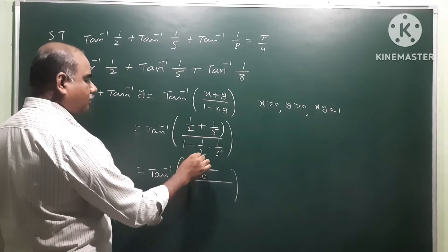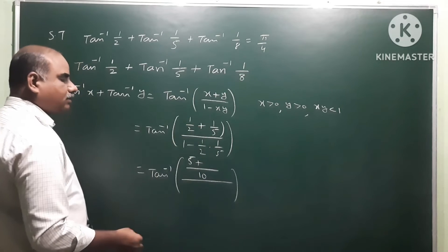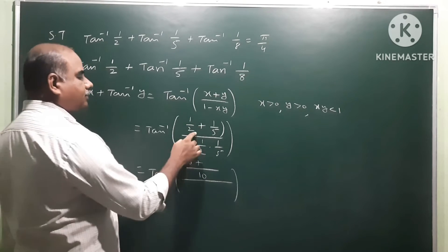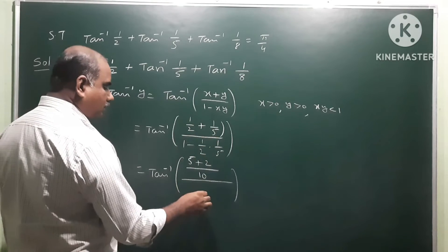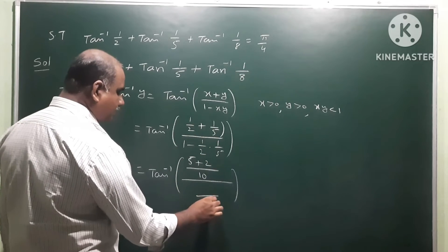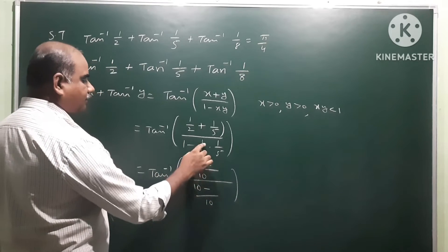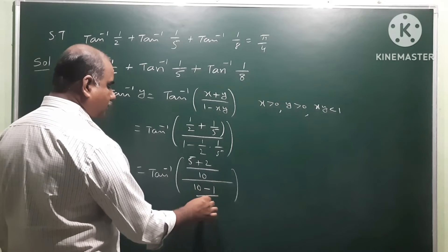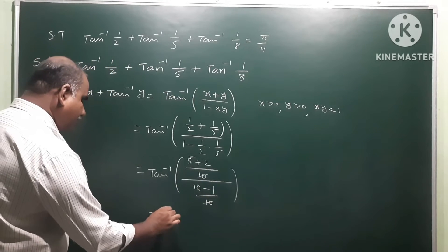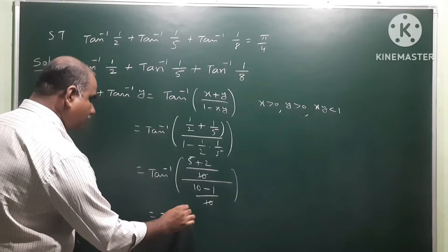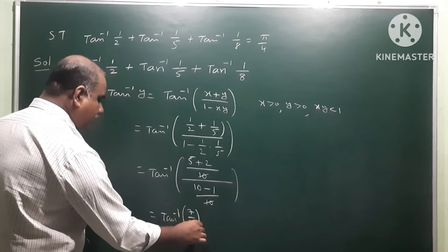Taking LCM as 10: numerator becomes 5 plus 2 which is 7, and denominator becomes 10 minus 1 which is 9. The 10s cancel, so we get tan inverse 7/9. The first two terms add up to tan inverse 7/9.